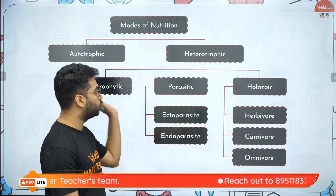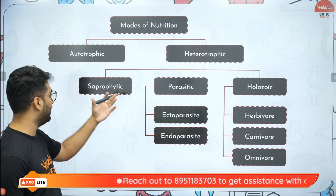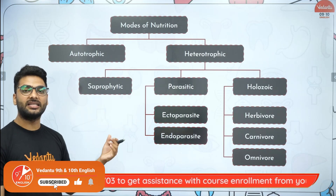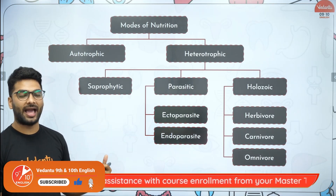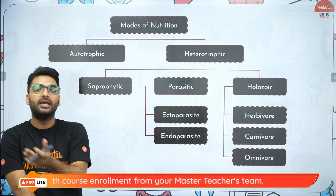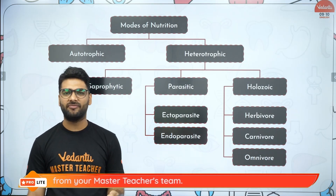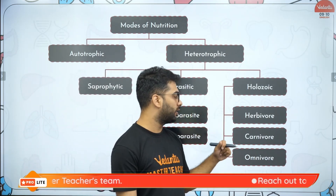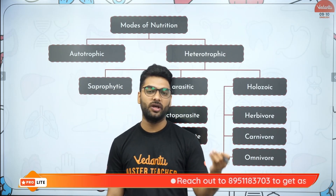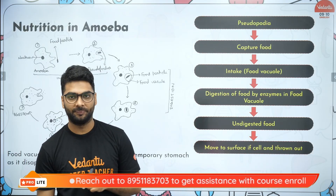We have already seen the two types of nutrition. Autotrophic, which involves green plants, bacteria, fungi, and algae. We also learnt about heterotrophic, where we have saprophytic — feeding on dead and decaying organic matter — and parasitic, which involves ectoparasitic outside the body like mosquito and lice, and endoparasitic like tapeworm and ascaris. We also saw holozoic nutrition, where intake is in the form of solid and liquid food, with herbivores like deer, carnivores like a lion, and omnivores like humans.